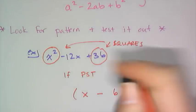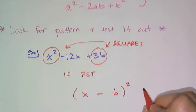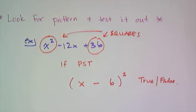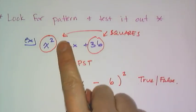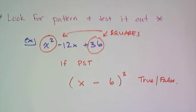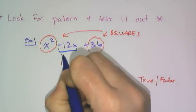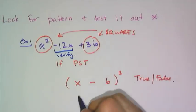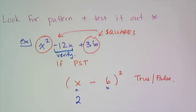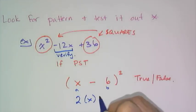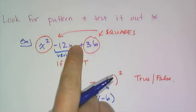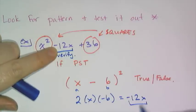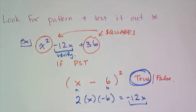But I'm not saying it's necessarily true — you have to test it. You must verify using the middle term, because it's supposed to equal 2ab. Taking 2 times x times negative 6 gives negative 12x, which is exactly what we were given. Because that checks out, we know the factoring is correct.